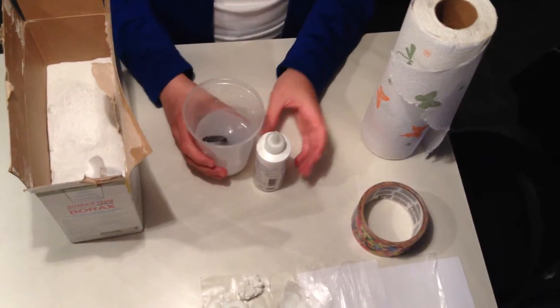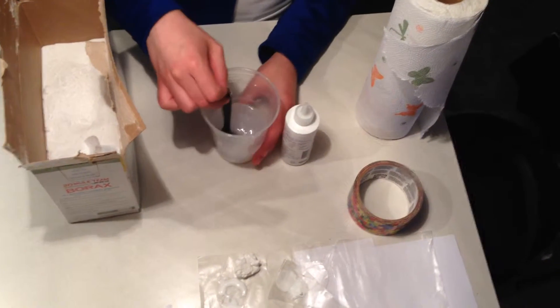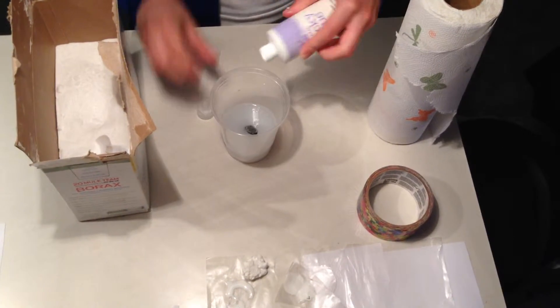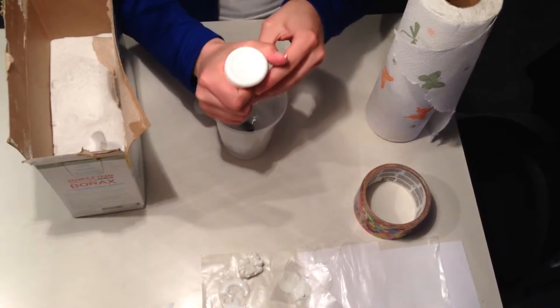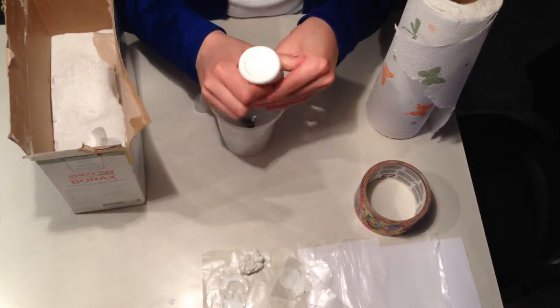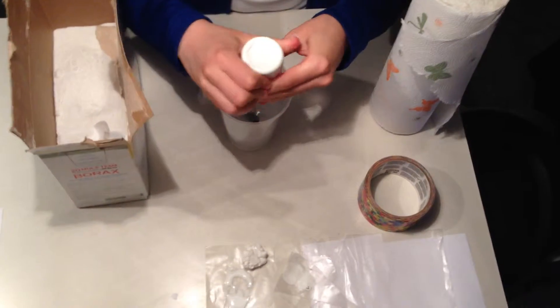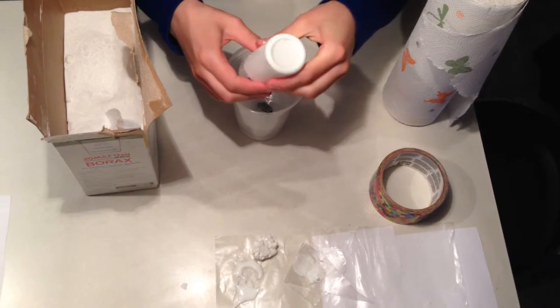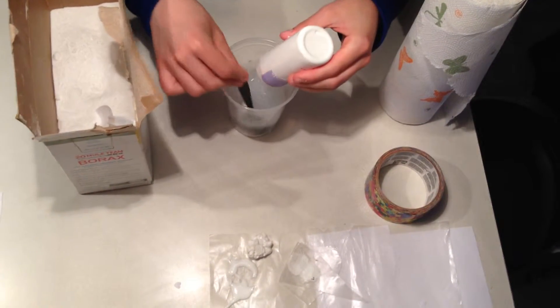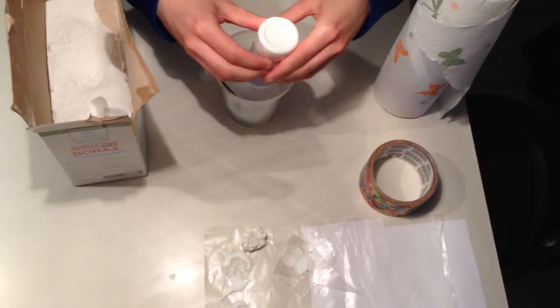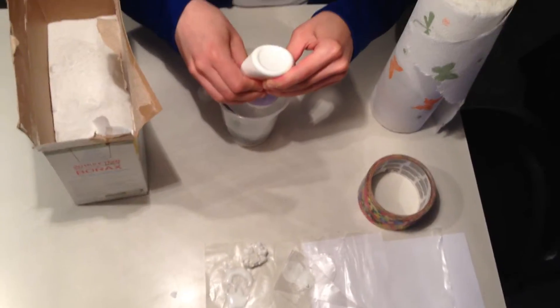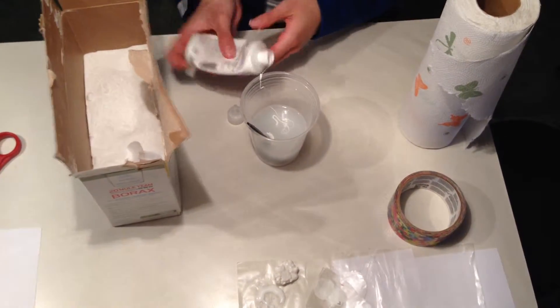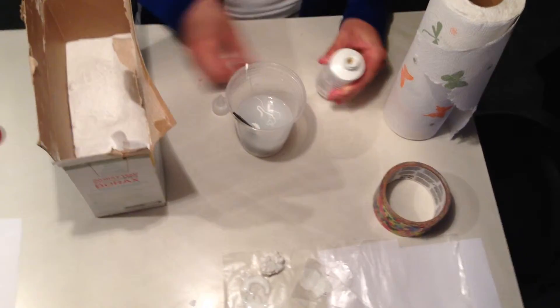So what you're going to do is take a cup and put water in it about one fourth of the way. And then you're going to add glue. So you want to add about the same amount of glue, so the more glue you add the more Silly Putty you can potentially have.